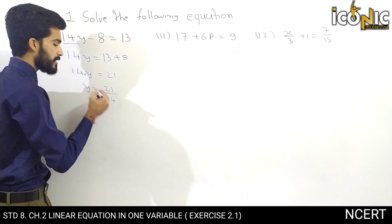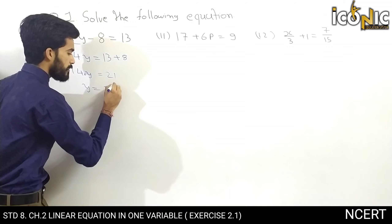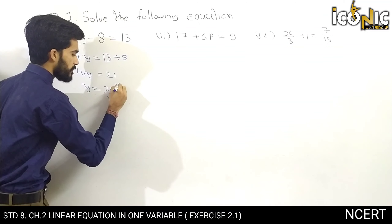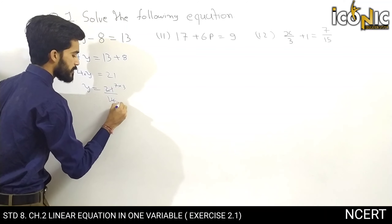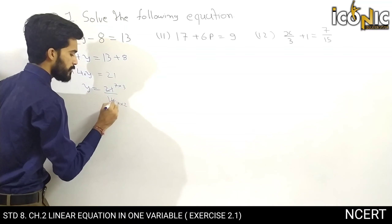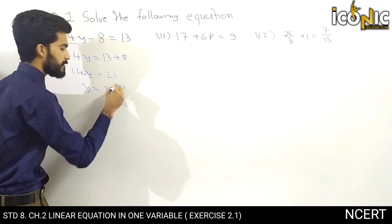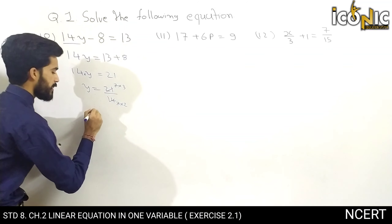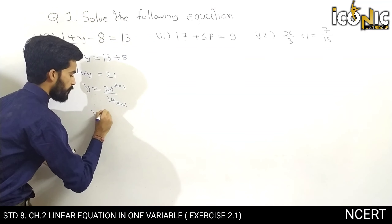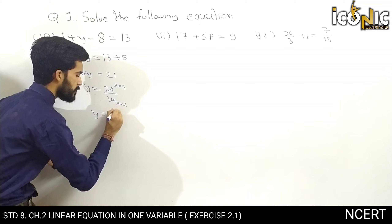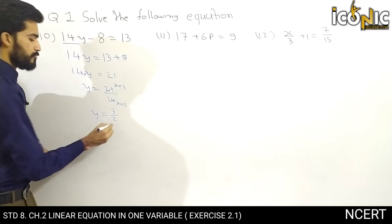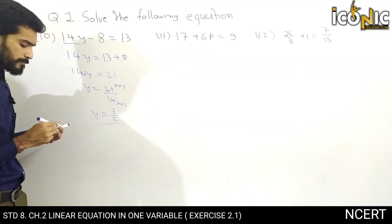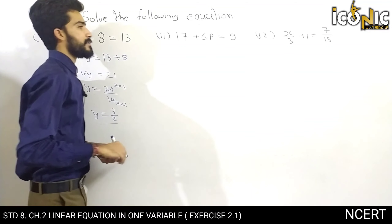Now we simplify 21 by 14. Both are divisible by 7: 21 divided by 7 is 3, and 14 divided by 7 is 2. The 7s cancel out, so y is equal to 3 by 2. This is our answer.